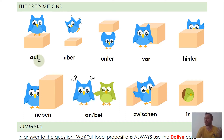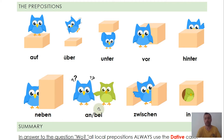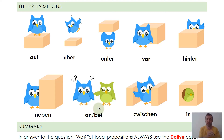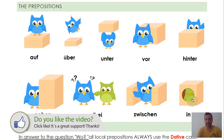Auf means on or on top, illustrated here with my little owl. Über means above. Unter means under. Vor means in front. Hinter means behind. Neben means beside. We also have an and bei, both meaning next to — they don't define exactly where, just next to, regardless of left, right, in front, or behind. Zwischen means between, and in means inside.